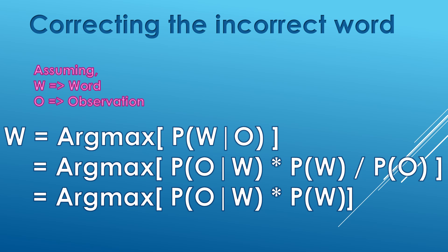In order to find the word which best suits the incorrect word, we need to maximize the probability of word given observation for all W belonging to vocabulary. As we have seen from previous video, using Bayes' theorem, we could write probability of W given O as probability of O given W multiplied by probability of W divided by probability of O.